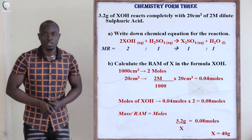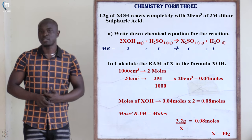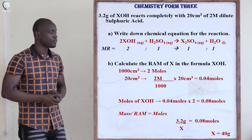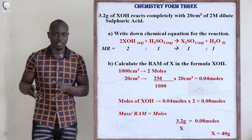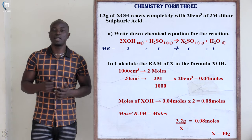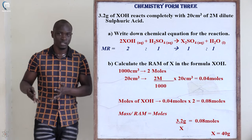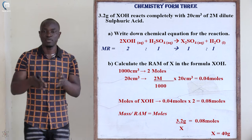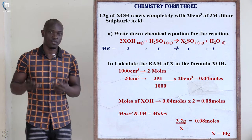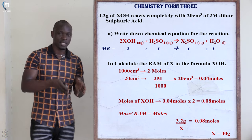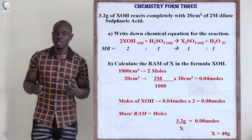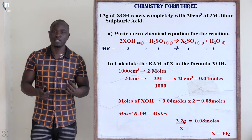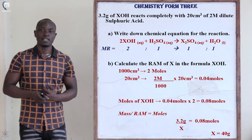The next question states: 3.2 grams of XOH reacts completely with 20 cm³ of 2 molar dilute sulfuric acid. First, write the chemical equation. XOH is a base (it has OH) and sulfuric acid is an acid, so acid plus base gives salt plus water. The equation is: 2XOH + H₂SO₄ → X₂SO₄ + 2H₂O.